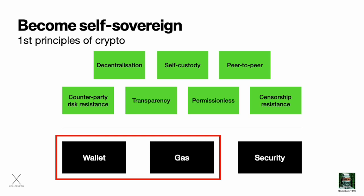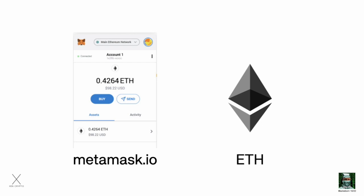All you need is a wallet that you can install for free, and then you fill this wallet with some gas that you will need for transactions. For this tutorial I used the MetaMask wallet, which you can download for free at metamask.io. When you install it in your browser you will also get a so-called seed phrase which consists of 12 words — make sure that you store this offline in a safe place. On the Ethereum network the native gas token is called ETH.